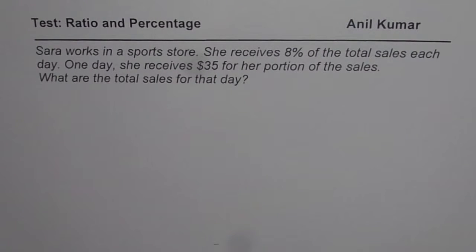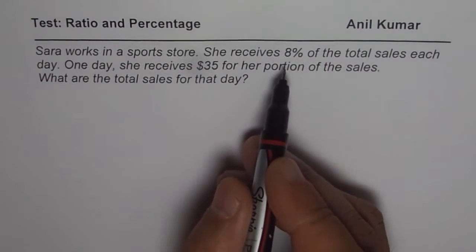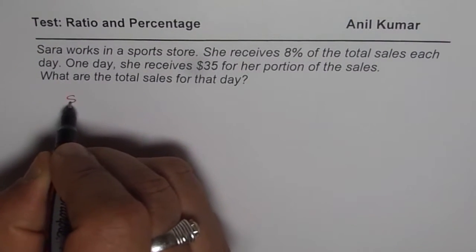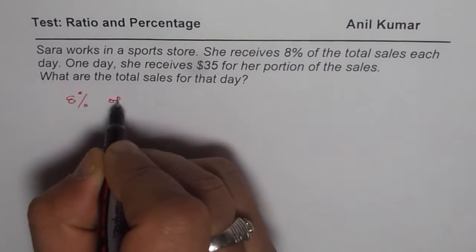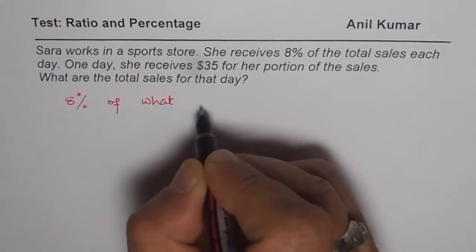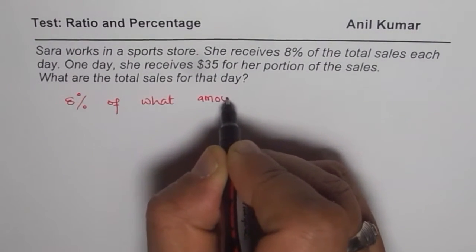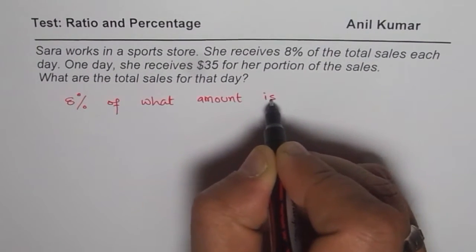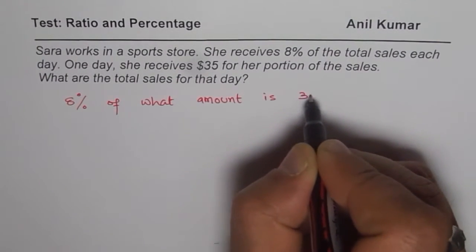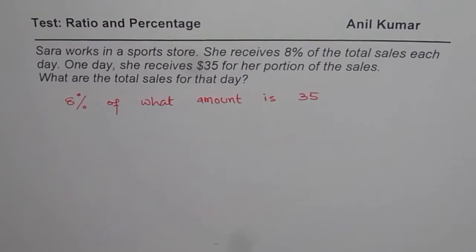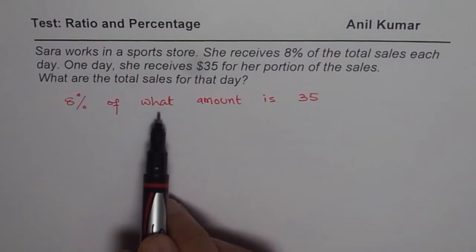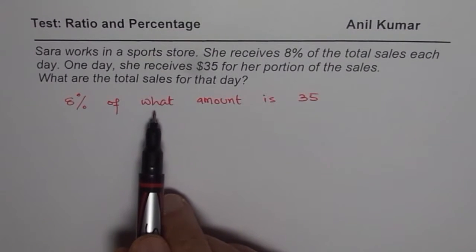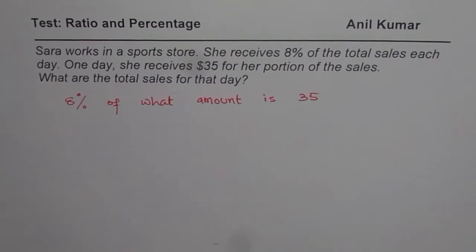One way of looking at it is that 8% of what amount is $35. That is one way of looking at it. So if that is the way, 8% of what amount? So you don't know the amount. So let us translate it.